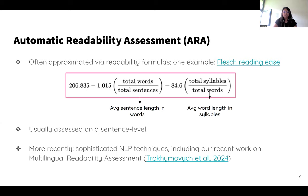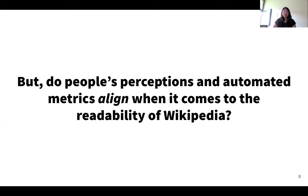More recently, we have sophisticated natural language processing techniques that rely on language modeling, including our recent work which tries to do this readability assessment for multilingual settings. But let's take a step back and ask ourselves: do people's perceptions of readability and these automated readability metrics actually align, especially when it comes to Wikipedia articles?